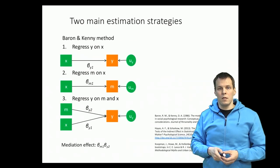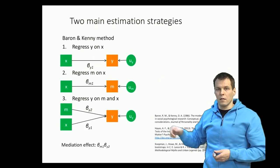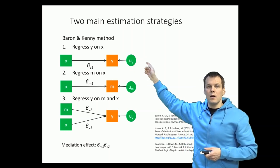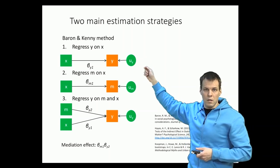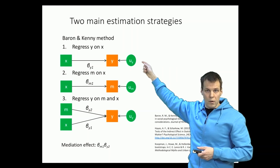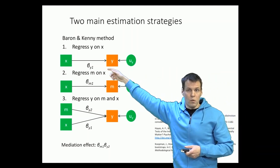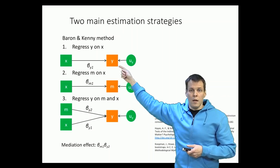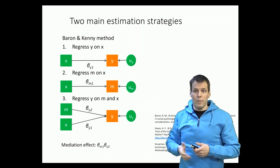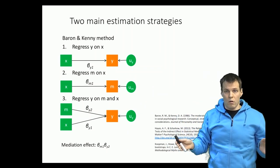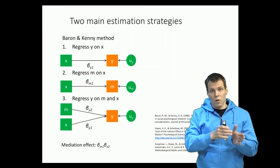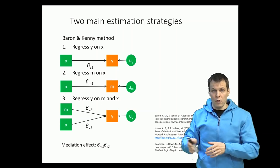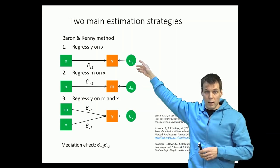The first one is the Baron and Kenny method, or causal steps method. The idea is that you run three regression analyses. The first regression analysis, you regress y on x to check whether there is an effect at all. If there is no effect of x on y, then we conclude that there cannot be mediation. So if x and y are not correlated or there is no causal relationship, no regression relationship after the relevant controls, then we conclude that there cannot be mediation.